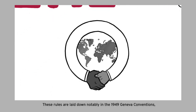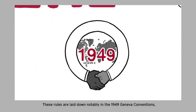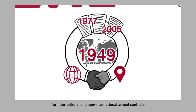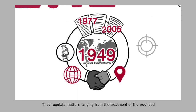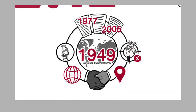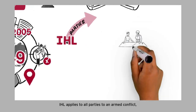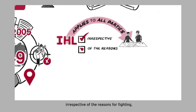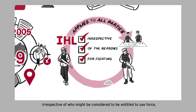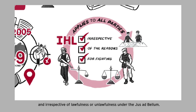These rules are laid down notably in the 1949 Geneva Conventions, their Additional Protocols, and Customary IHL for international and non-international armed conflicts. They regulate matters ranging from the treatment of the wounded to the prohibition of attacks against civilian populations. IHL applies to all parties to an armed conflict, irrespective of the reasons for fighting, irrespective of who might be considered to be entitled to use force, and irrespective of lawfulness or unlawfulness under jus ad bellum.